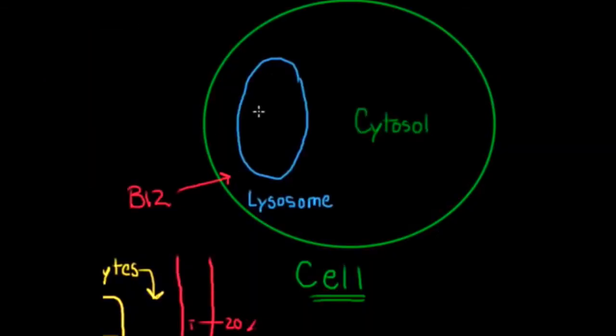Moving over to the cell, cobalt is then broken off via a lysosome, and B12 is released into the cytosol. Once it is in the cytosol, we can use it as a cofactor for two different enzymes: methionine synthase and methylmalonyl mutase.